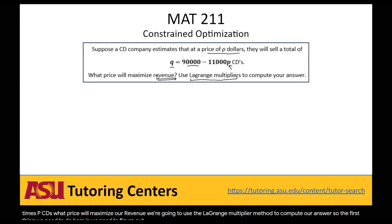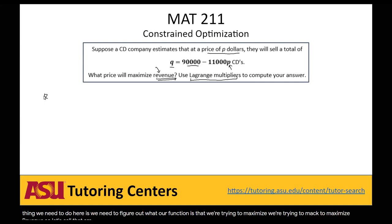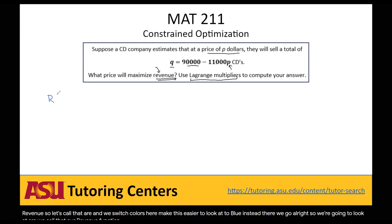The first thing we need to do is figure out what function we're trying to maximize. We're trying to maximize revenue. We'll call that R, our revenue function, in terms of P and Q. Revenue, recall, is just price times quantity — so P times Q.